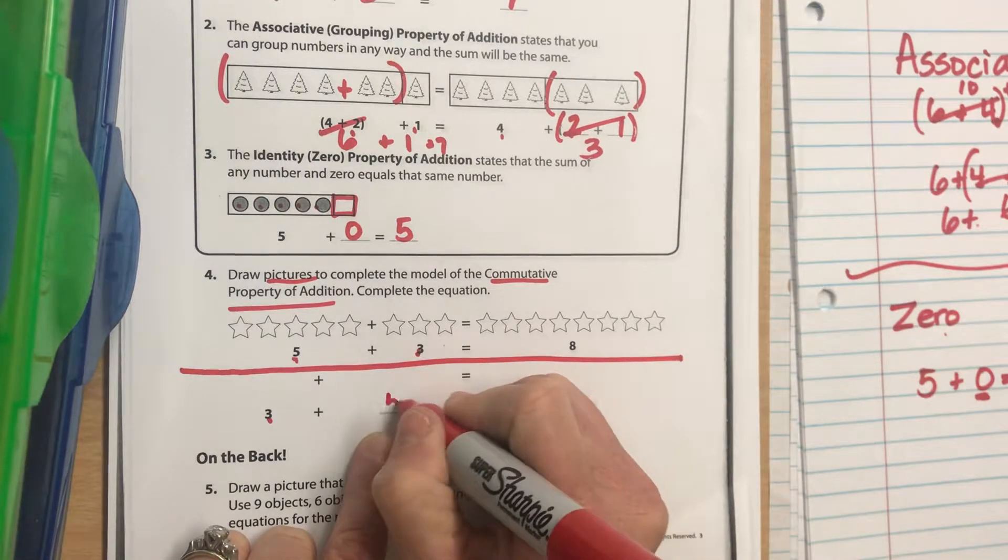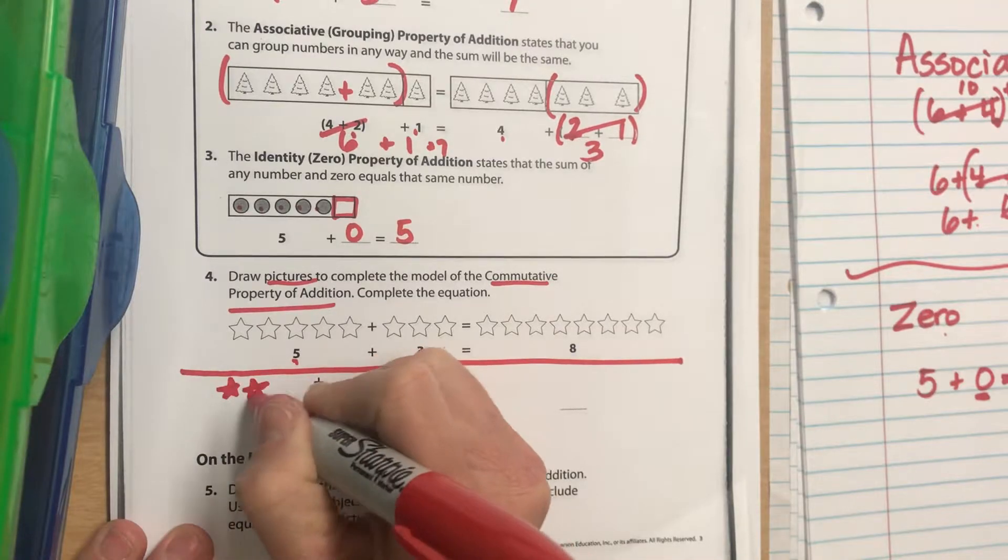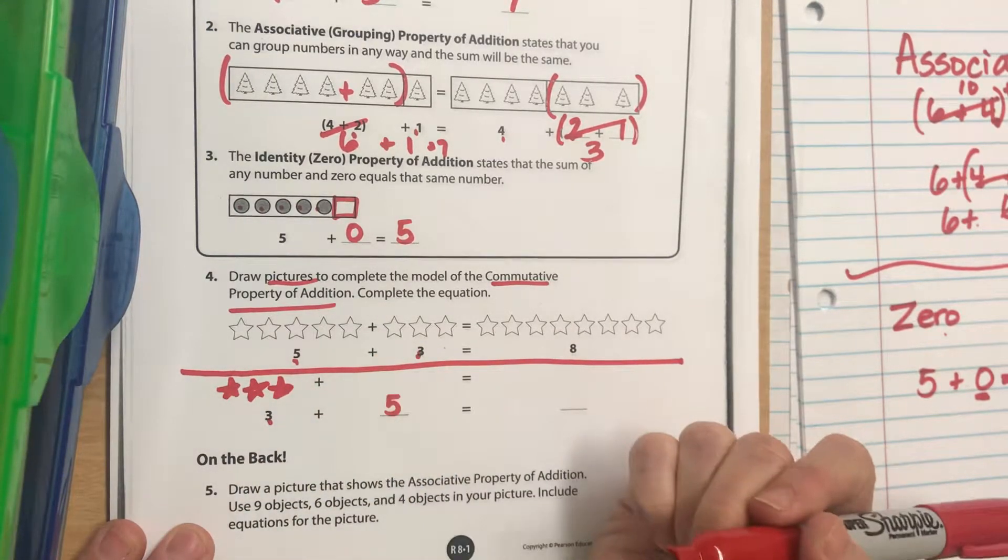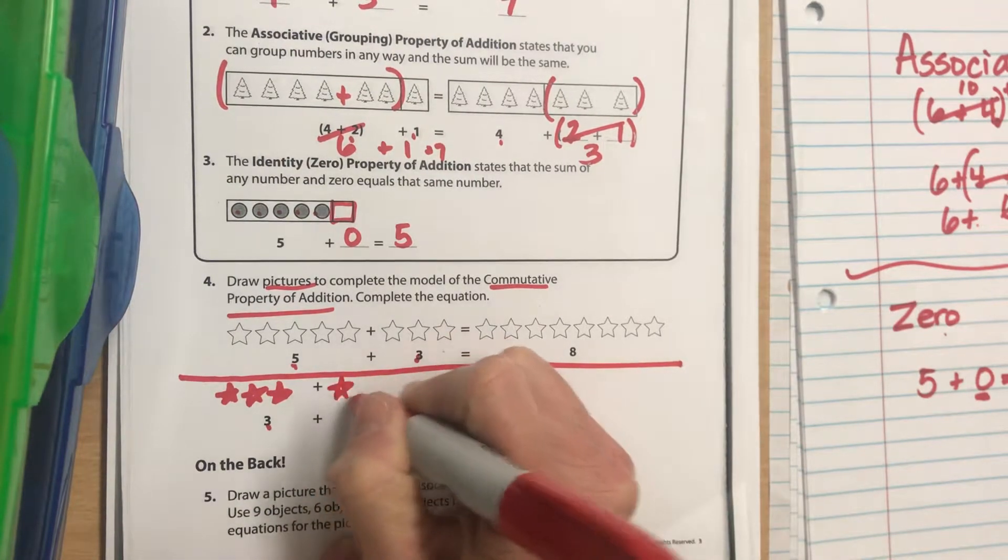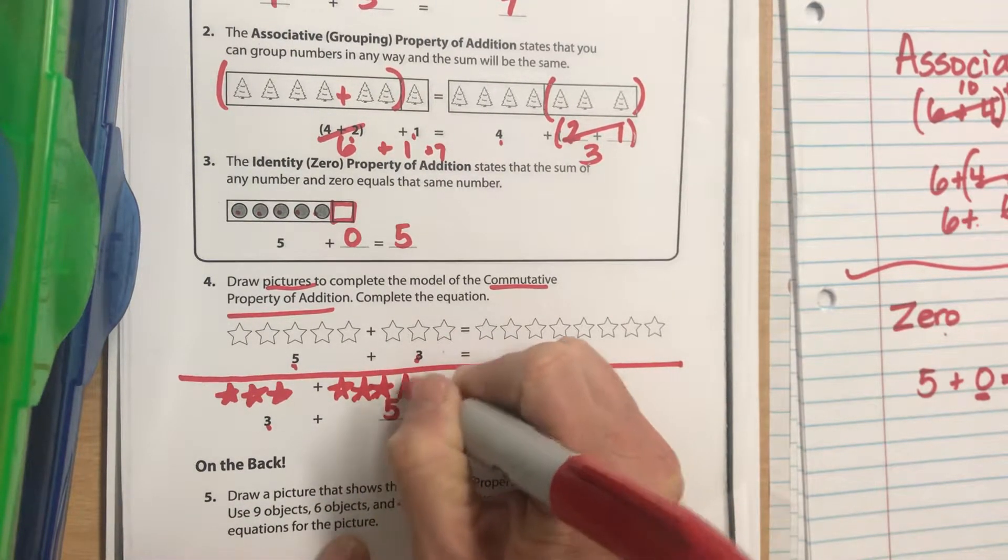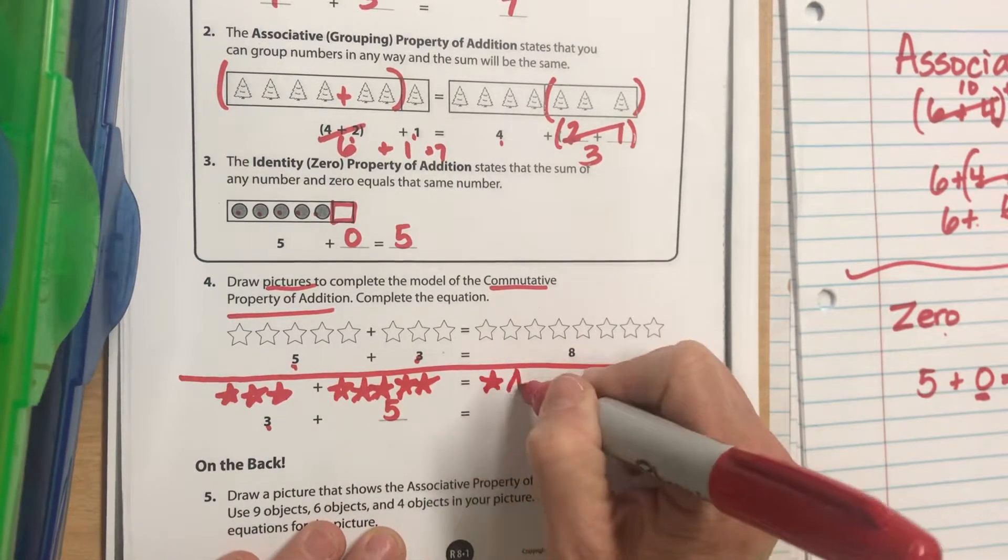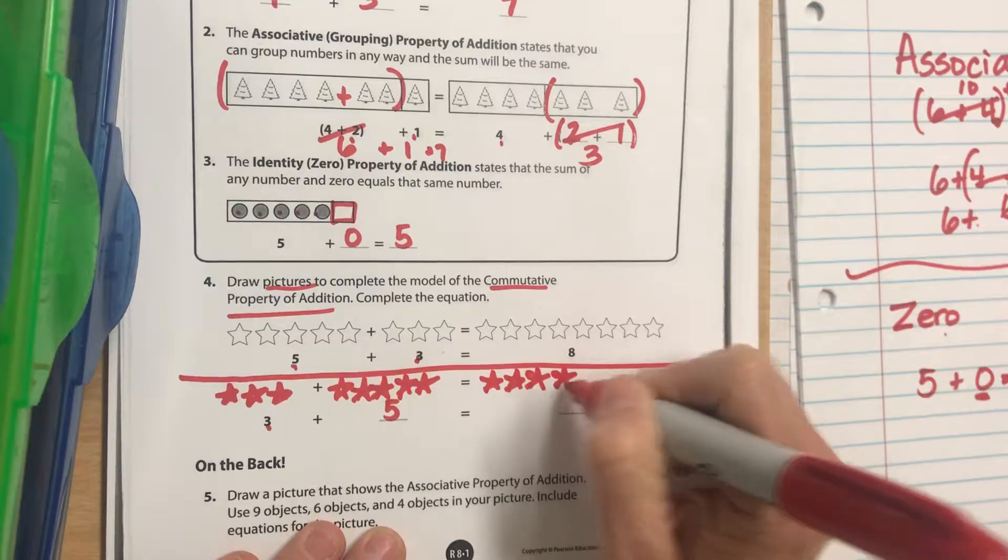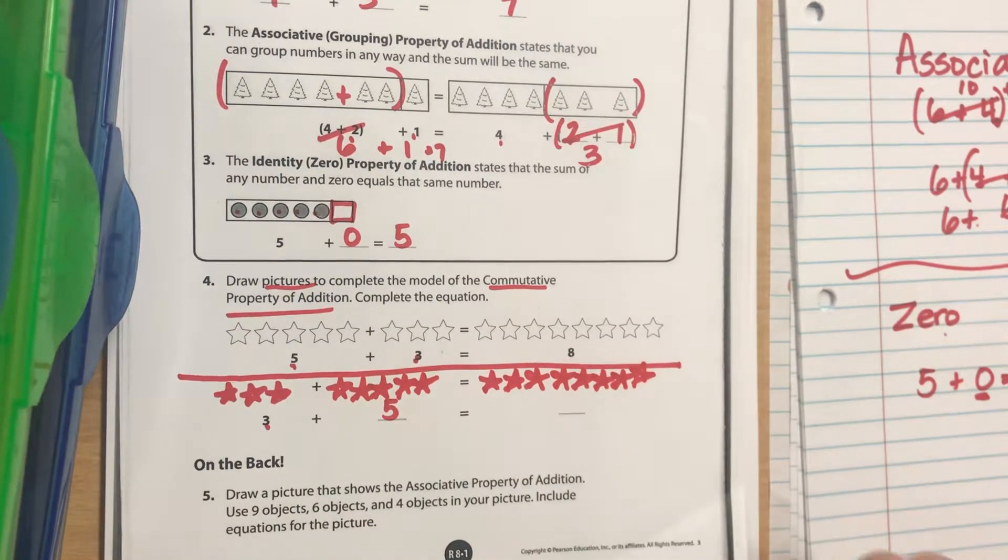It should be a 5. Now you need to draw your stars: 1, 2, 3, and how many you're going to draw over here? Draw them. Yes, you should have 5. Then we add them together and you know your total: 8.